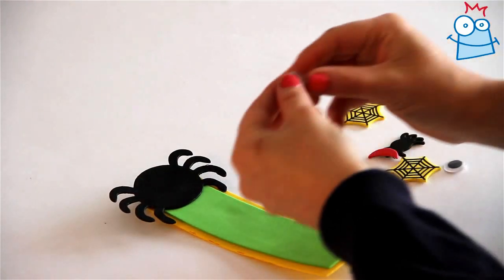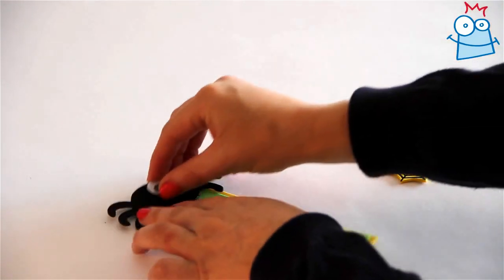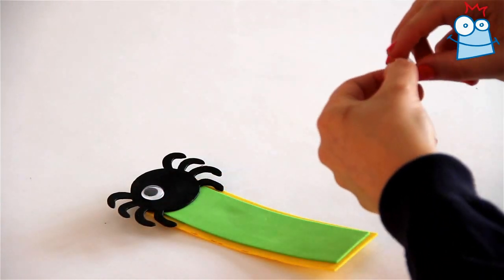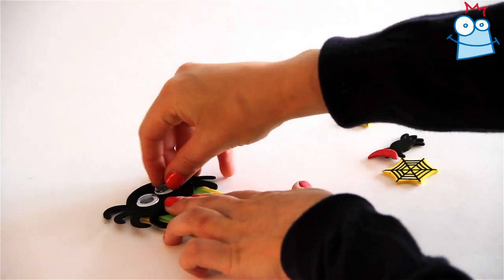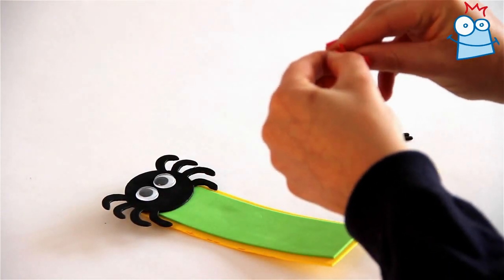Next, add the self-adhesive googly eyes so your spider can see. Then take the self-adhesive mouth and stick it on just below.